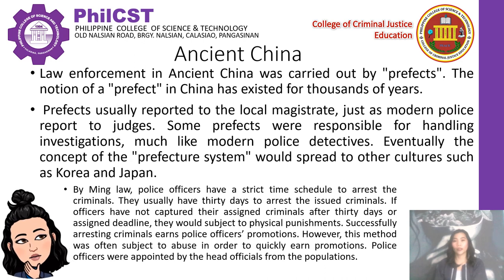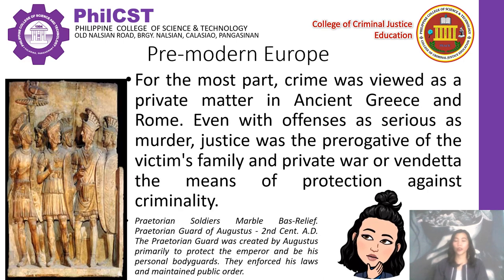Police officers were appointed by head officials from the population. In pre-modern Europe, for the most part, crime was viewed as a private matter in ancient Greece and Rome. Even with offenses as serious as murder, justice was the prerogative of the victim's family, and private war or vendetta was the means of protection against criminality. Publicly owned slaves were used by magistrates as police in ancient Greece. In Athens, a group of 300 citizen slaves was used to guard public meetings, keep order, and assist with crowd control, handling prisoners, and making arrests. Other duties associated with modern policing, such as investigating crimes, were left to the citizens themselves.